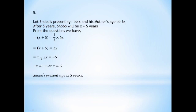So the present age of x: a few years later, x plus 5. Now this is the question. If you want to see: 1 by 3, one third. This is x plus 5 equal to 1 by 3 into 6x. So this is 3 and 6. So x plus 5 equal to 2x.